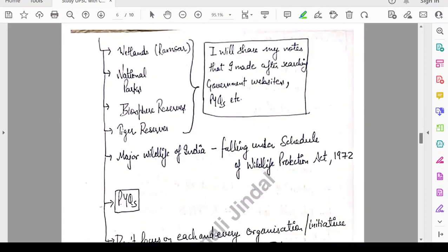You need to see wetlands, national parks, wildlife reserves, tiger reserves. These have to be done very thoroughly and you should try to make a map that will help you to learn easily. And then major wildlife of India falling under the schedule of Wildlife Protection Act 1972. Shankar IAS YouTube has covered these topics. I will also share my notes that I have made after searching government websites and previous year questions. Don't focus on each and every organization or initiative that is coming up in current affairs. Believe me, every year UPSC has something new that is not given in any material. But most important ones given in every material.